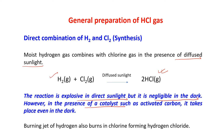However, in the presence of a catalyst such as activated carbon, the reaction takes place even in the dark. A burning jet of hydrogen gas also burns in chlorine forming hydrogen chloride. So for the preparation of hydrogen chloride gas from hydrogen and chlorine gas, diffuse sunlight is required. If done in direct sunlight the reaction will be explosive, and in the dark this reaction can occur in the presence of a catalyst such as activated carbon.